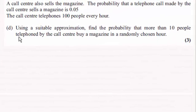Hi there. Now for the next part of this question, we're given that a call center also sells the magazine, and the probability that a telephone call made by the call center sells a magazine is 0.05. The call center telephones 100 people every hour, and using a suitable approximation, find the probability that more than 10 people telephoned by the call center buy a magazine in a randomly chosen hour for three marks.